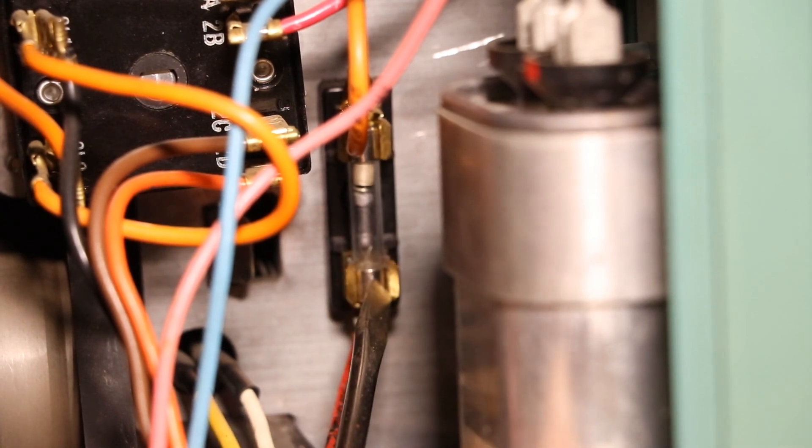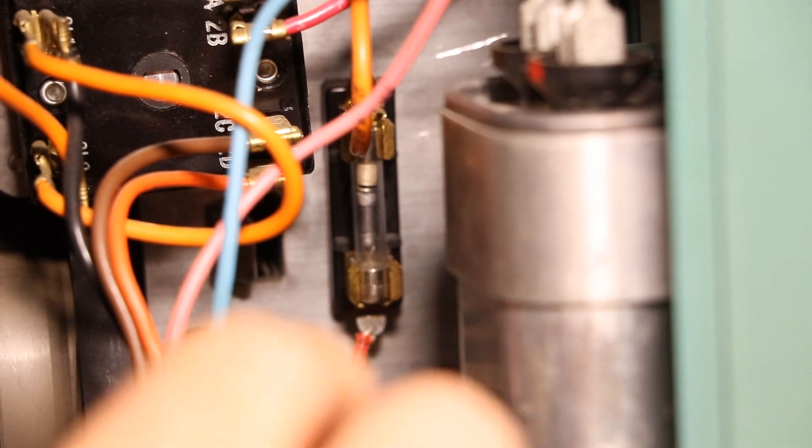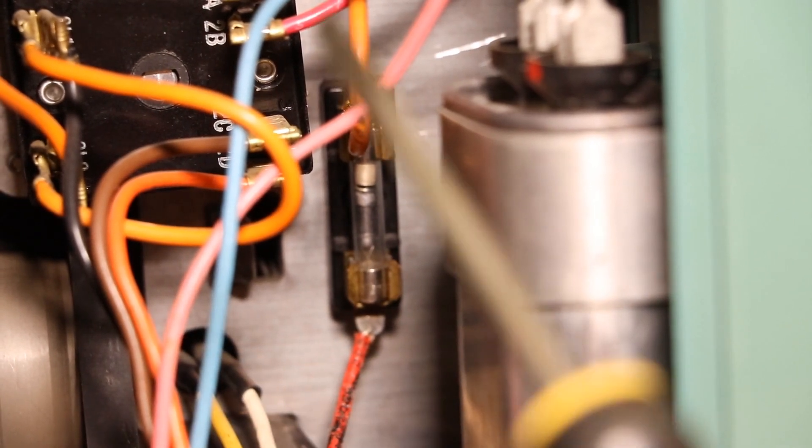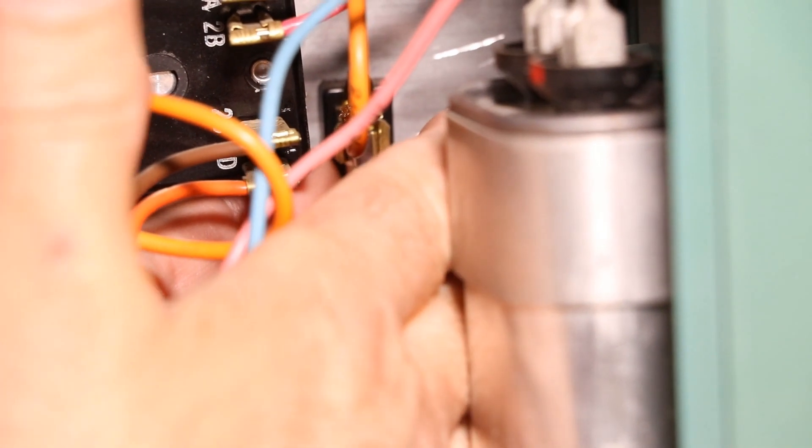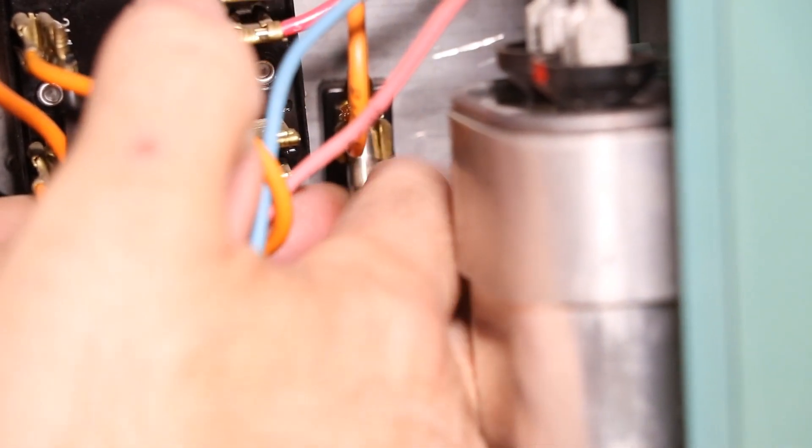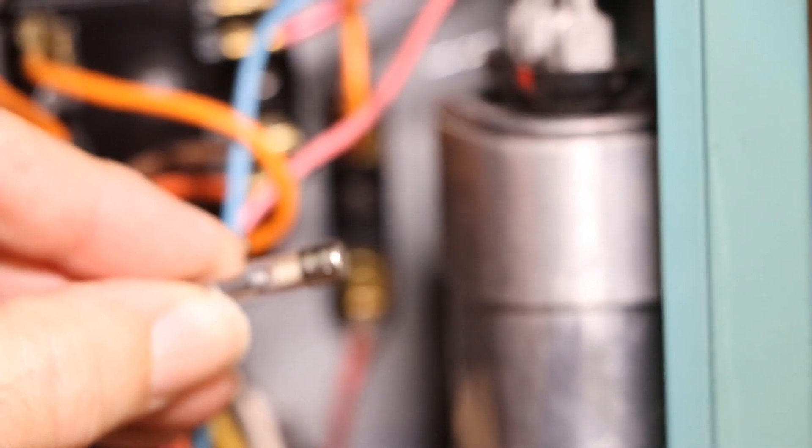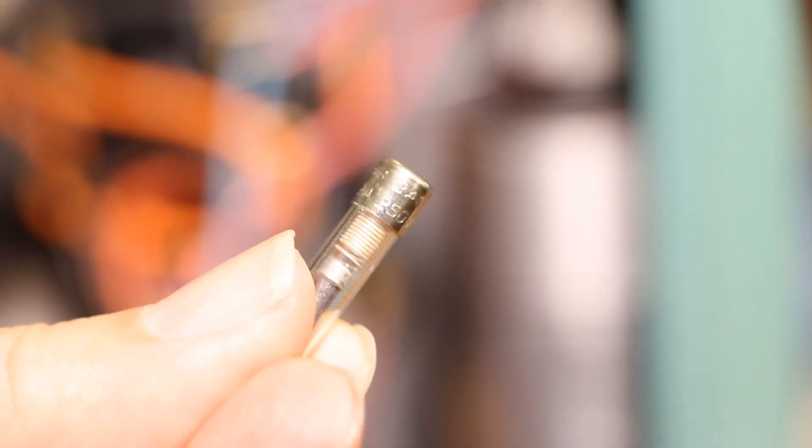So right here, this is the fuse. Take that out fairly carefully to check it because if you drop it down in here behind the fan assembly, you'll be taking off this side cover for sure to see if you can find it. So I usually use two hands and get in there. There's a lot of wires in the way. Okay, so there's the fuse. It's 250 volts at a half an amp.